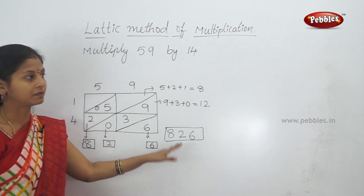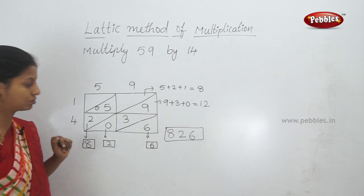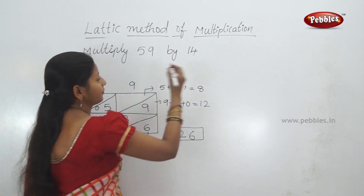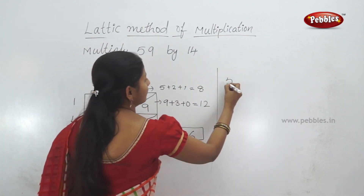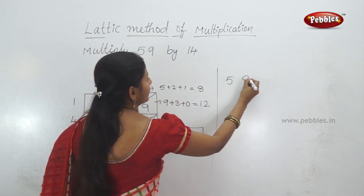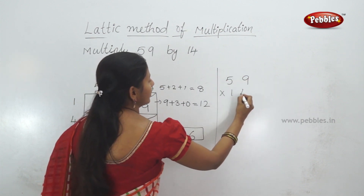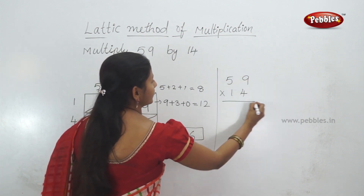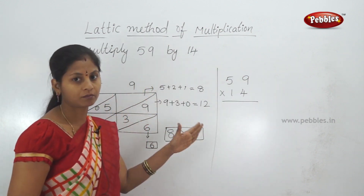If we verify the multiplication, this answer is correct. 59 times 14 gives 826.